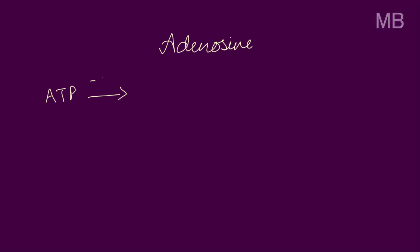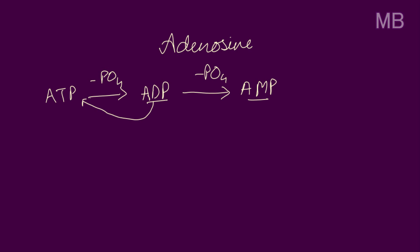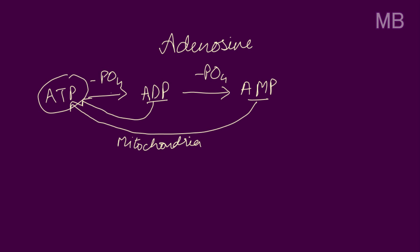ATP is dephosphorylated to ADP to release energy. This ADP can further be dephosphorylated to AMP to release energy. This ADP and AMP can further be rephosphorylated back to ATP in the presence of mitochondria, involving a series of enzymatic reactions and the presence of oxygen. During conditions where ATP is increasingly dephosphorylated and there is less availability of oxygen, AMP is converted to adenosine by dephosphorylation.